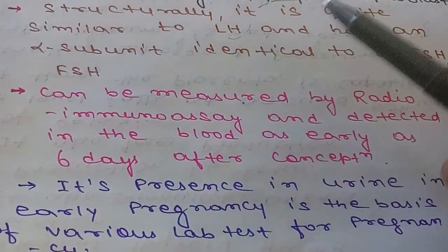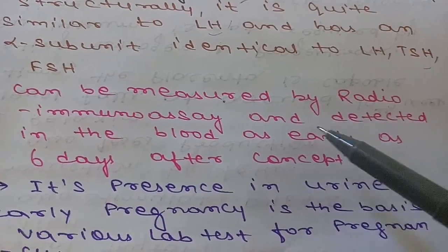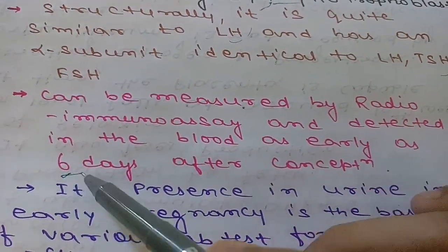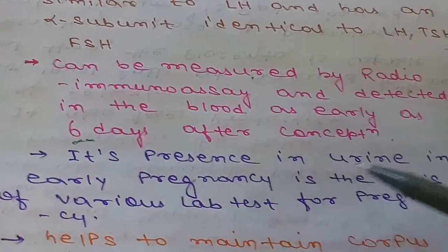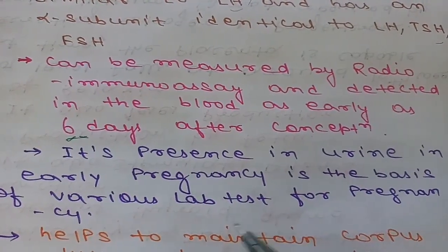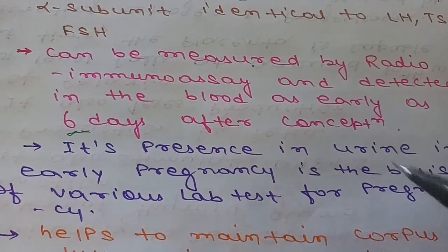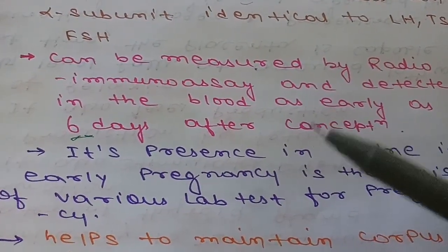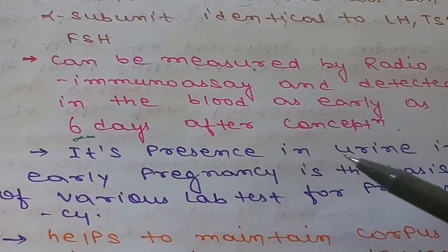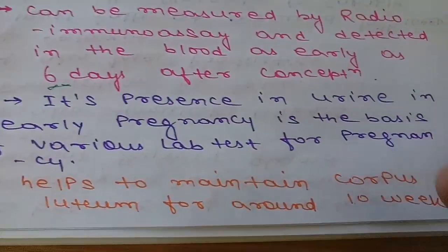HCG can be measured by radioimmunoassay and can be detected in blood as early as six days after conception. Its presence in urine in early pregnancy is the basis of various lab tests for pregnancy. The basic principle behind all those pregnancy tests lies in HCG, and we generally check HCG amount in urine.